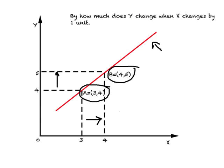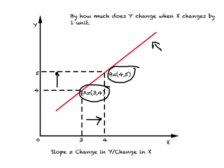Think for a moment — what math concept do we use when measuring by how much Y changes when X changes by one unit? This is called the slope. Slope is the change in the value of Y divided by the change in the value of X. Whenever we use the term 'change,' it means you work out the difference between two consecutive values of that variable.